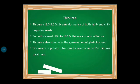The fourth chemical is thiourea at 3 to 9.5 percent, which breaks down dormancy of both light-requiring and chill-requiring seeds. For lettuce seeds, 10⁻² to 10⁻³ molar thiourea is most effective — you need to remember this. Thiourea also stimulates germination of gladiolus seeds. For dormancy in potato tubers, 3 percent thiourea treatment is used.